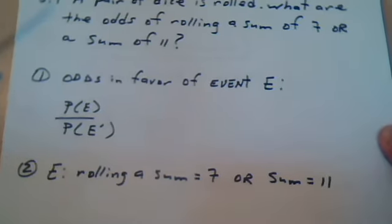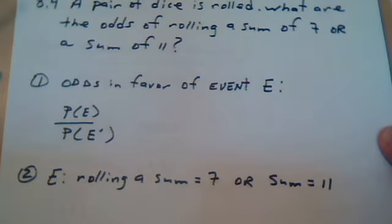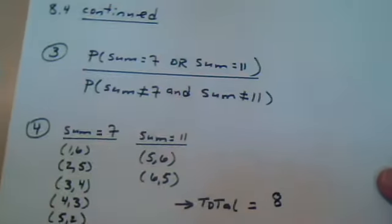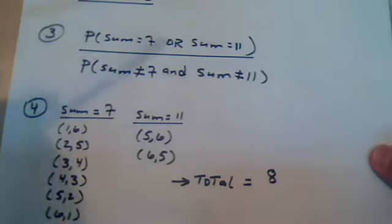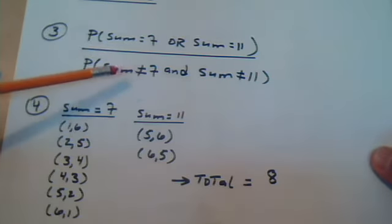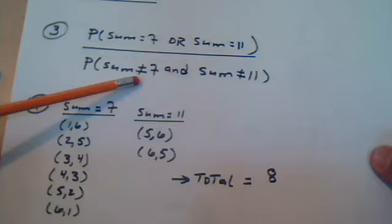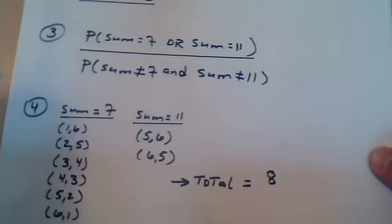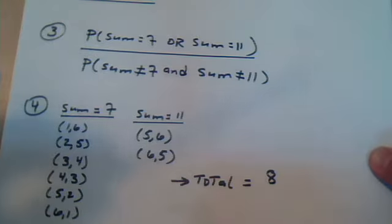So, the event is rolling a sum equal 7 or sum equal 11. You write your formula, and here's the E. And notice this is not E. That's why we put not equal, not equal. So, each of these is going to require a count. Probabilities require that we count.